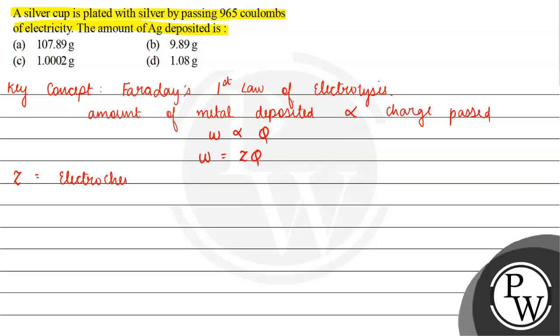Z equals equivalent mass divided by 96500. The equivalent mass E for silver is 108.